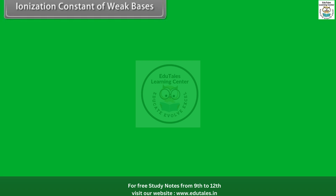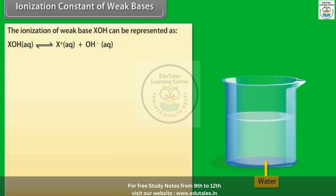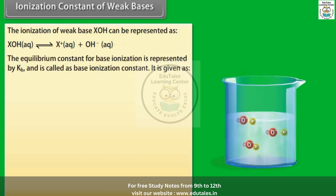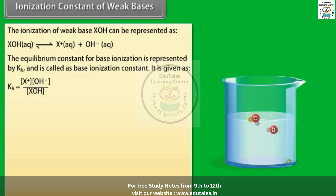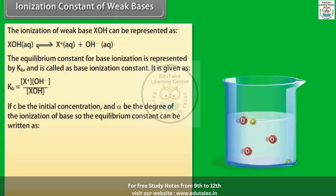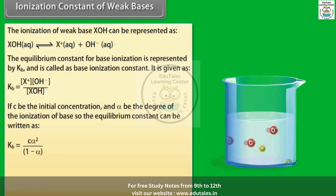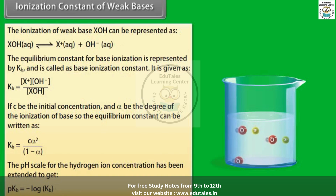Ionization constant of weak bases. The ionization of a weak base XOH is represented similarly. The equilibrium constant for base ionization is Kb, called the base ionization constant. If C is the initial concentration and α is the degree of ionization, then Kb = Cα² / (1−α).